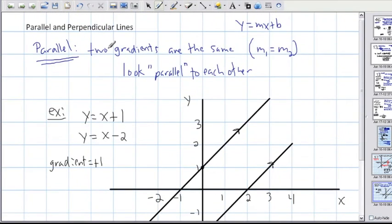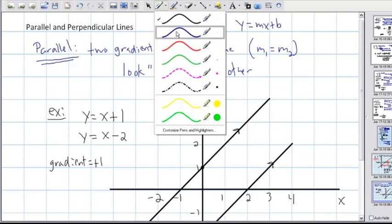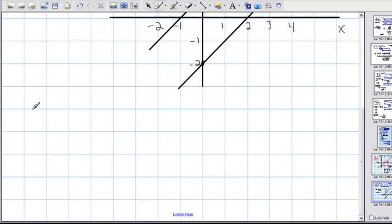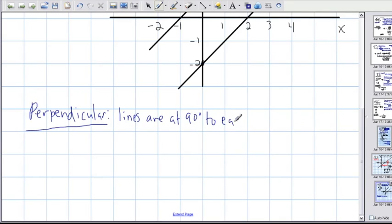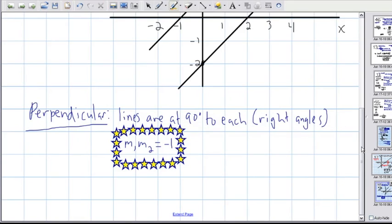Now that was parallel lines. But what if I want perpendicular lines? So if two lines are perpendicular, what does that mean? Well, that means that the two lines are at 90 degrees to each other, at right angles. That's what it means to be perpendicular. And a nice little relation that actually relates them tells you that m1 times m2 equals negative 1.